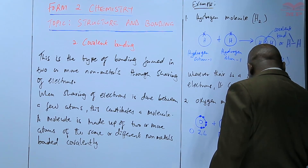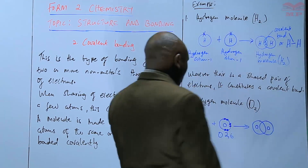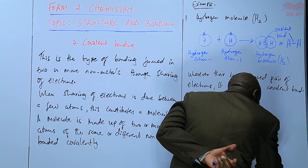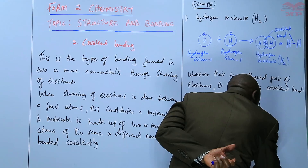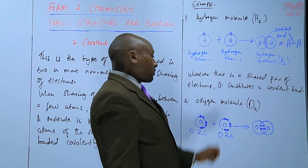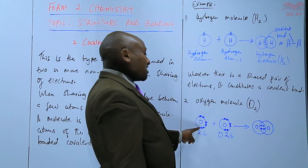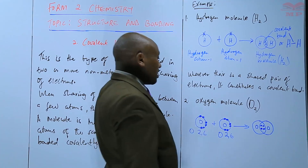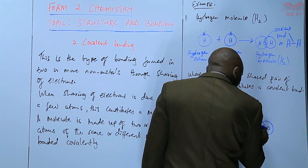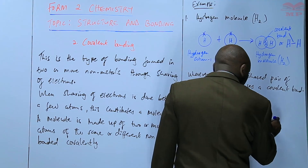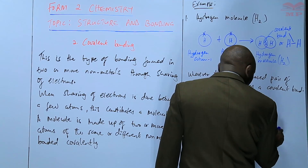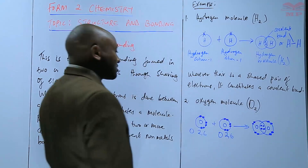In the diagram you have O and O — the two oxygen atoms. Each will bring two electrons for sharing, so four electrons in total are shared — two from each. The remaining unshared electrons on each oxygen are four, because six minus two equals four.